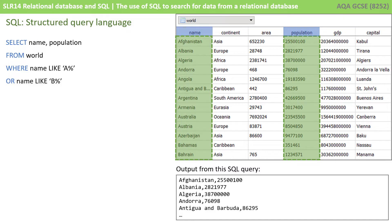Here we're saying select name and population — just two fields — from the world table, where the name field is LIKE 'A%' OR LIKE 'B%'. In other words, return all the rows but only if the data held in the name field starts with either an A or a B. We can then have any characters after that, and you can see the output it returns below.